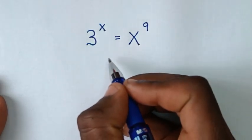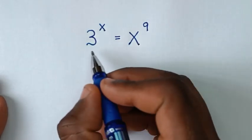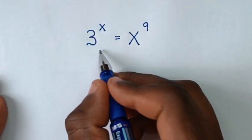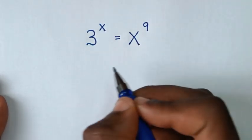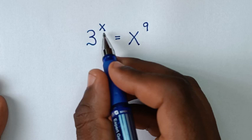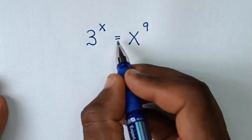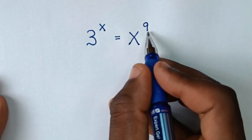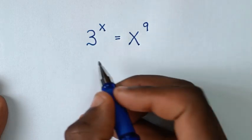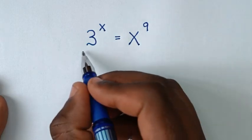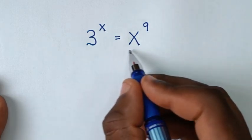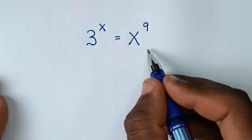Hello, you are welcome to solve this math problem, which is 3 to the power of x is equal to x to the power of 9 — to find the value of x from this equation.